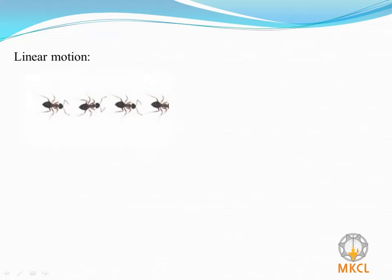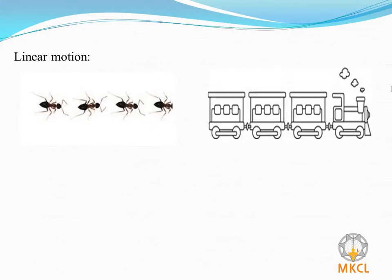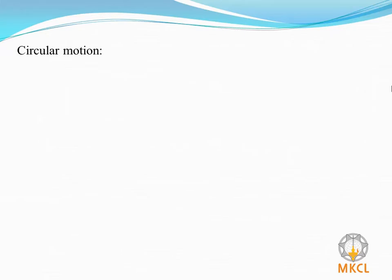You must have seen trail of ants going from one place to another, train moving on its track. In all these examples, motion is along a straight line. When an object moves in a straight line, it is said to be in a linear motion.